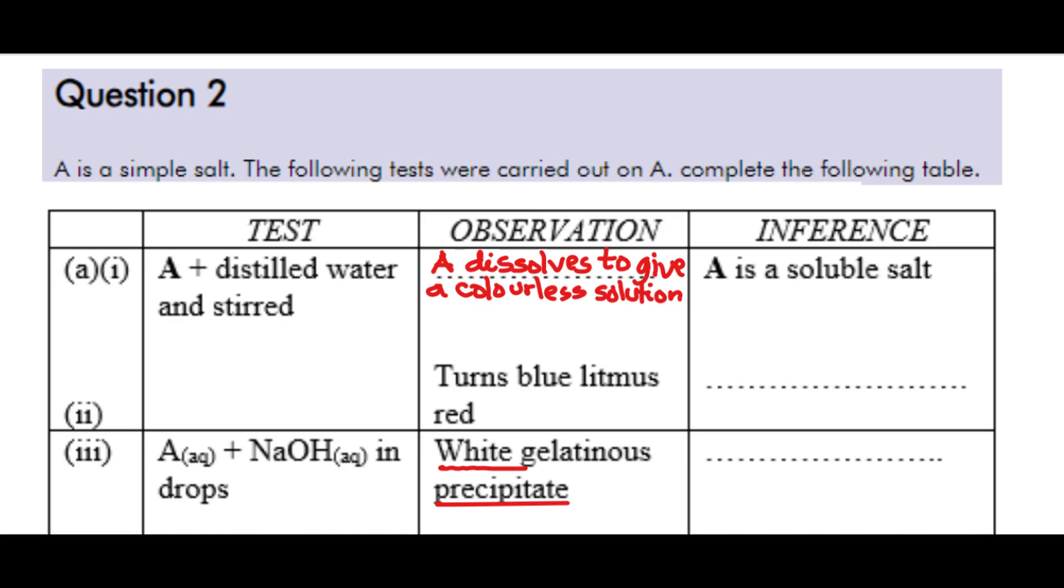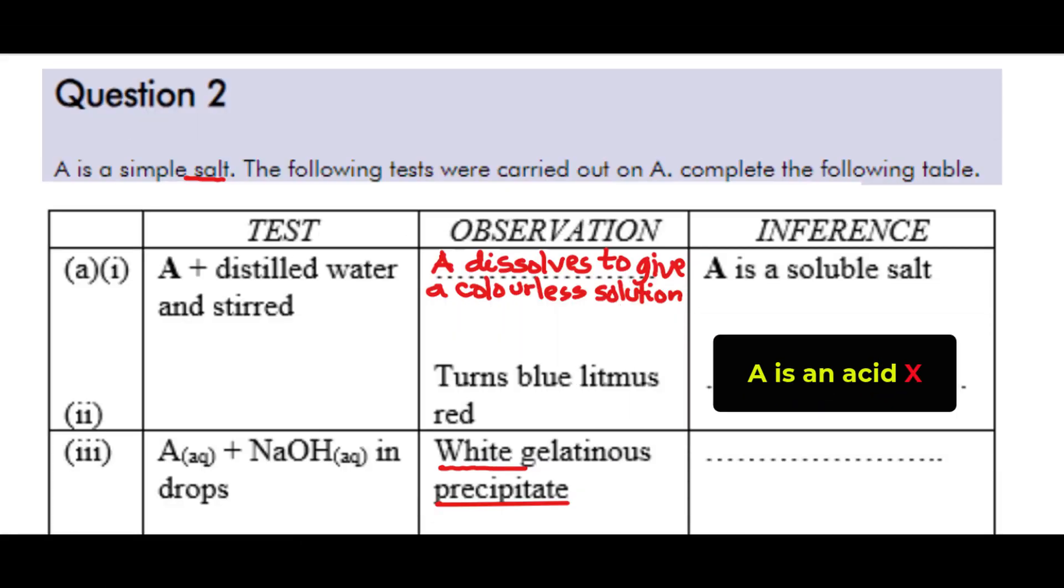Now the next test here was carried out to test the effect of solution of A on litmus. And we are told that it turns blue litmus red. So a substance or a solution that turns blue litmus red means that that solution is acidic, not necessarily an acid. Remember we are told that A is a simple salt. So you cannot write A is an acid. If you write A as an acid as your inference, you are wrong.